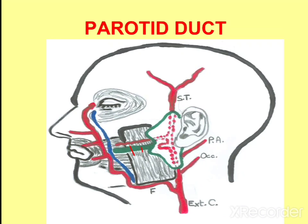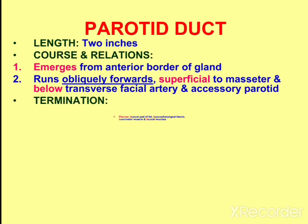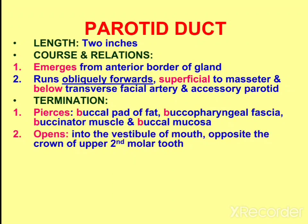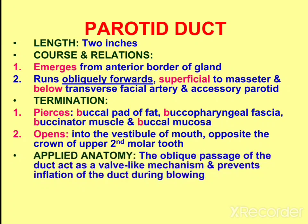The parotid duct receives the secretions of the parotid gland and transfers them to the mouth. It is two inches long. It emerges from the anterior border of the gland, runs forwards and obliquely, and lies superficially to the masseter, below the transverse facial artery and the accessory parotid gland. It terminates by piercing the buccal pad of fat, buccopharyngeal fascia, buccinator muscle, and buccal mucosa, then opens into the vestibule of the mouth opposite the crown of the upper second molar tooth. The oblique passage of the duct acts as a valve-like mechanism and prevents inflation of the duct during blowing.